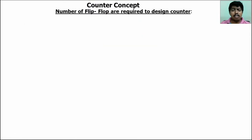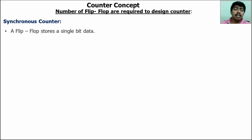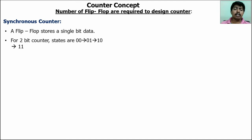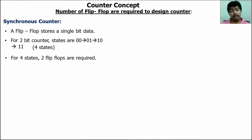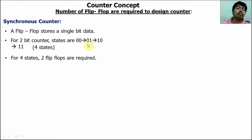First we will discuss about synchronous counter — the number of flip-flops required to design a synchronous counter. We know that a flip-flop stores a single bit of data. For a 2-bit counter, the possible states are 00, 01, 10, 11 — four states. So to design a four-state synchronous counter, we need two flip-flops, because each state represents two bits.